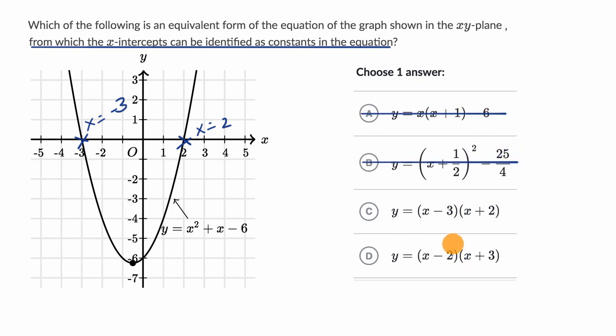Now, both choices C and D have some things that deal with threes and twos here. And what we have to remember is these are the x-values that make y equal to zero. And so when you have this quadratic in factored form,